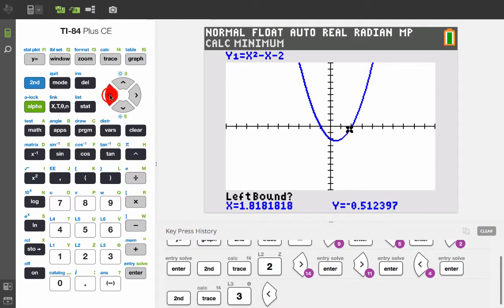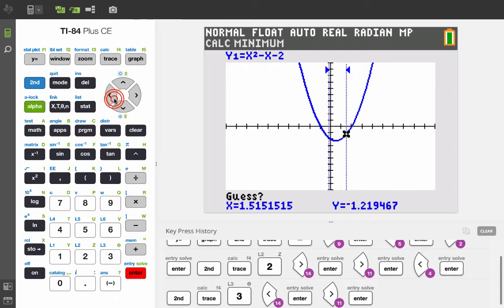So the left bound, we indicate by moving this cursor somewhere to the left of where we think the minimum is, and we press enter, move it somewhere to the right of where the minimum is, press enter, make a guess, press enter.